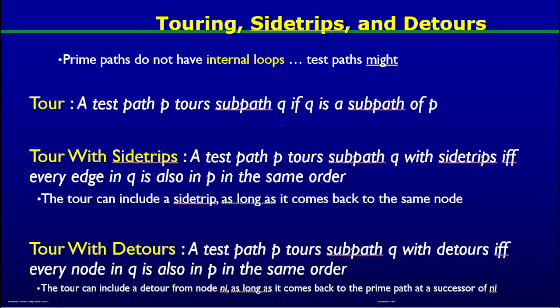In the last video we worked out an example of prime paths and found out that computing prime paths in a given graph can give us paths that exercise a loop in the graph more than once, and without actually executing that loop. There are a few more concepts related to prime paths which we are going to cover in this video.